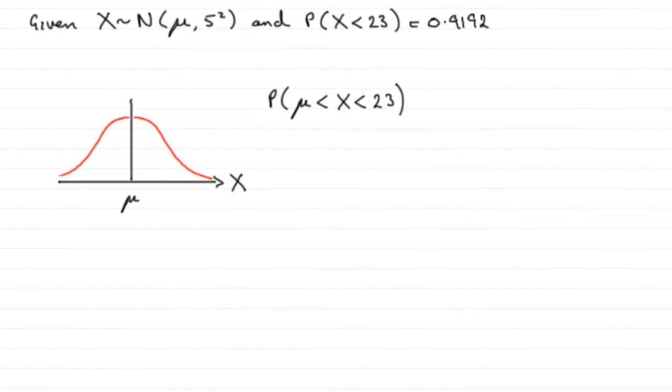This last part of the question asks to state the value of the probability that X lies between mu and 23.